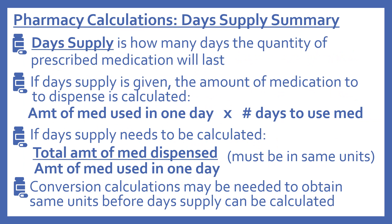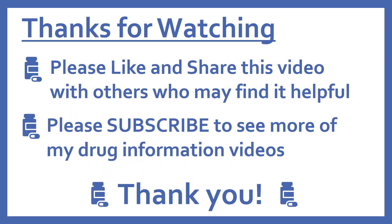To summarize: day supply is how many days the quantity of prescribed medication will last. If day supply is given, calculate the amount to dispense by multiplying daily use by the number of days. If day supply needs to be calculated, divide the total amount dispensed by the amount used in one day — these must be in the same units, and conversion calculations may be needed. Thanks for watching; please like, share, and subscribe for more drug information videos.